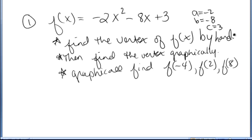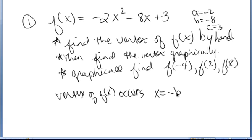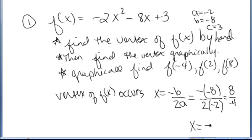We're asked to first find the vertex of the function by hand. Recall that the vertex of a quadratic function f(x) occurs where x equals negative b over 2a. So to find the x value of the vertex, I need to use the formula x equals negative b over 2a. So it's negative the b value, so negative negative 8 over 2 times the a value, so 2 times negative 2. So the numerator is positive 8, the denominator is negative 4, and so x is equal to negative 2.